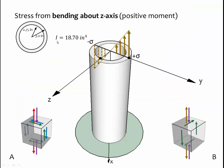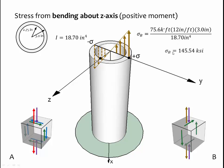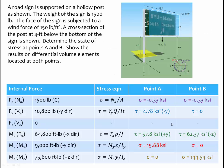The moment of inertia is 18.70 inches to the fourth. Stress at point B equals the moment 75.6 kip-feet times 12 inches per foot to convert, times 3 inches — the distance from the neutral axis (the z-axis) to point B — divided by the moment of inertia. We get the stress at point B equal to 145.54 ksi.